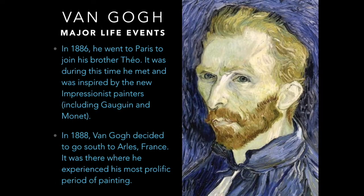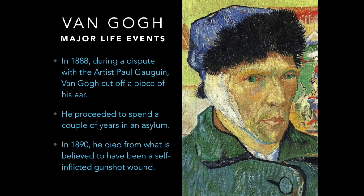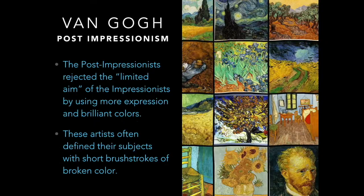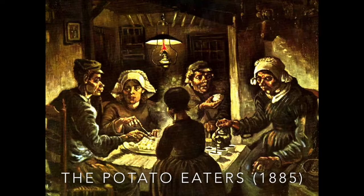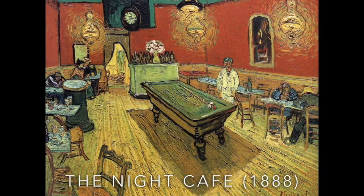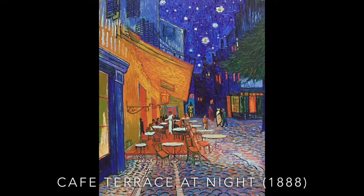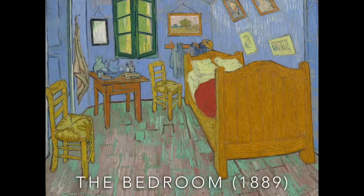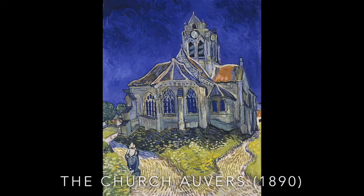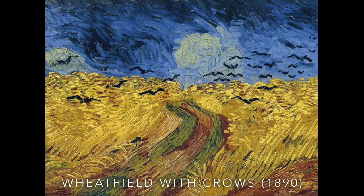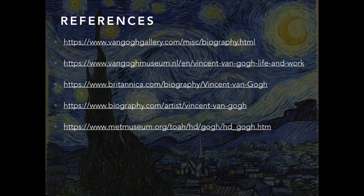The following slides should discuss major life events. Provide information about your artist's life and career, such as maybe they moved to another country, got married, or maybe discuss how their career took off. After that, I'd like you to discuss the style or movement that your artist was associated with. You will then include a transitional slide, followed by ten slides that show ten different examples of your artist's artwork. Please include the name and year the work was created on each slide. The final slide is a reference slide, where you will list all of the resources you utilized to create your PowerPoint and to research your artist.